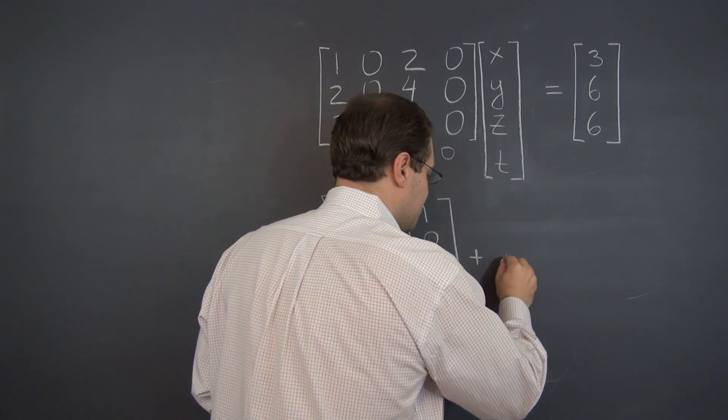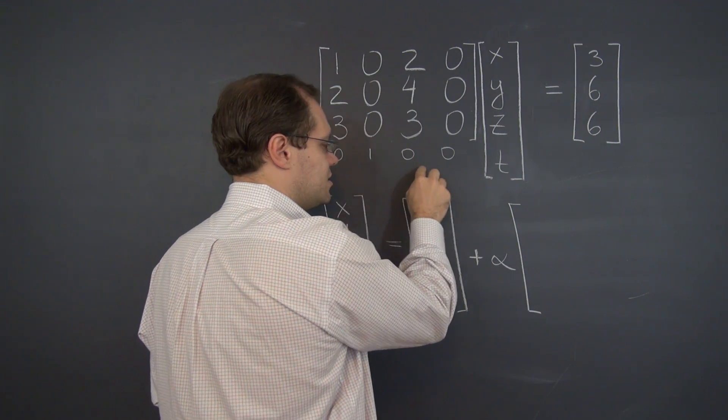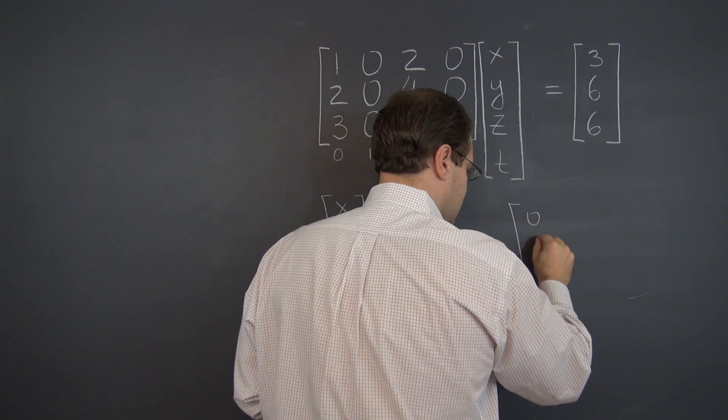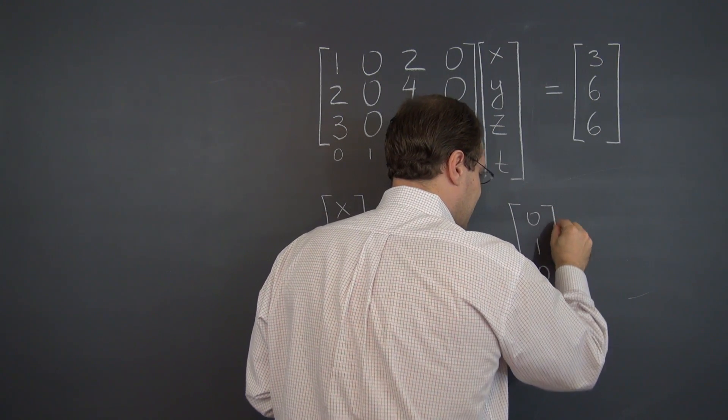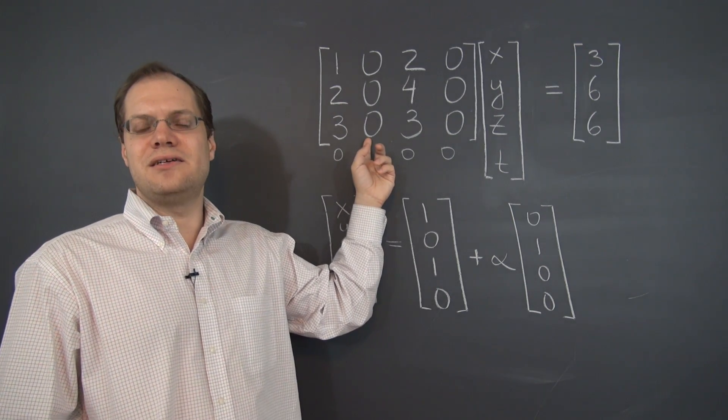So the corresponding element in the null space is zero, one, zero, zero. And this just captures the fact that this column is zero.